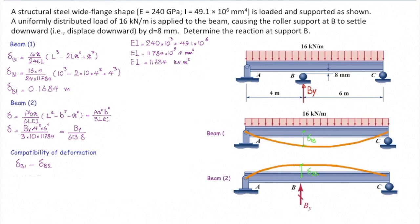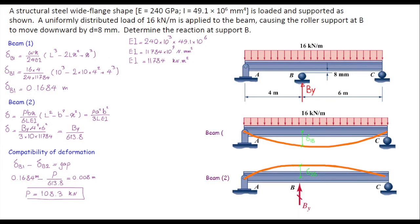Let's write it down here. Delta B1 minus delta B2 is equal to that gap. Delta B1 is 0.1684 meter. Delta B2 is BY over 613.8 and that would be equal to the gap which is 8 millimeter. Note that I need to convert that into meter because all other parameters are in kilonewton and meter and if I solve it for the reaction force at that point either if I call it P or BY that would be equal to 108.3 kilonewton and that would be the final answer of this problem.